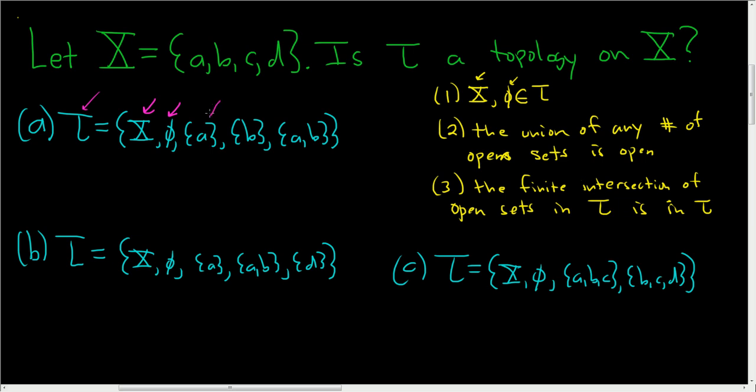If we take this and union it with this, we get this. If we take this and union it with this or this, we simply get this back. So there's no issues there. This condition is certainly satisfied. So condition two is done.